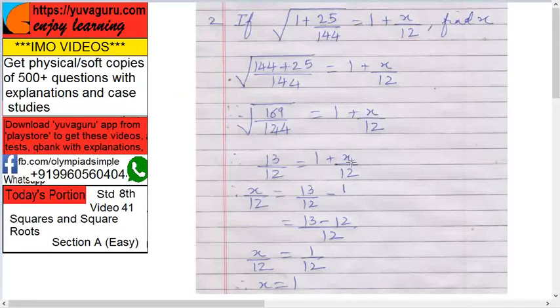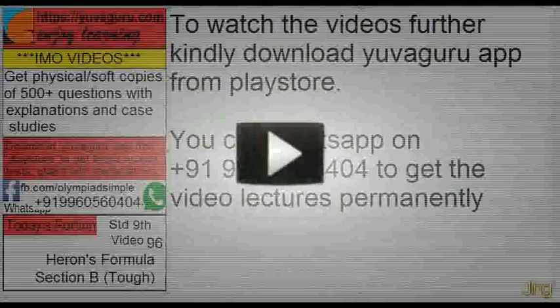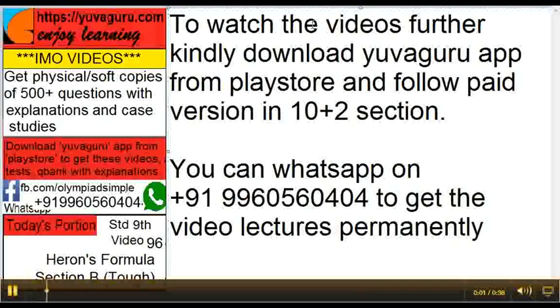Now we have to find x, so keep x/12 on one side, take 1 on this side. So it becomes x/12 equals to 13/12 minus 1.